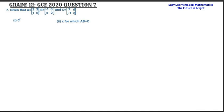Let's start with question 1: find the transpose of C. I'm going to write matrix C first, which is equal to 7, 6, negative 1, 0. Then we are going to find the transpose of matrix C, so I'm going to write the transpose notation.